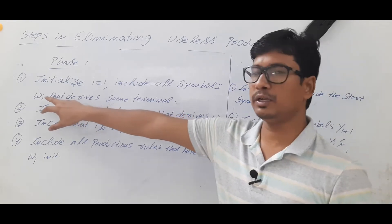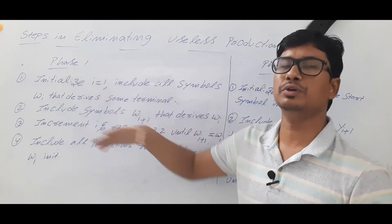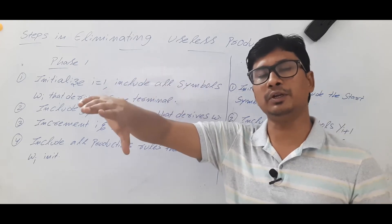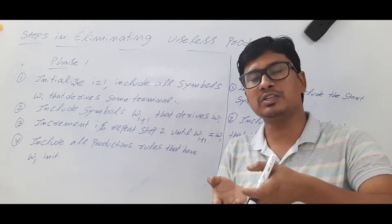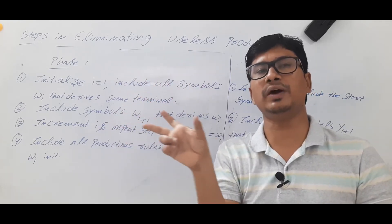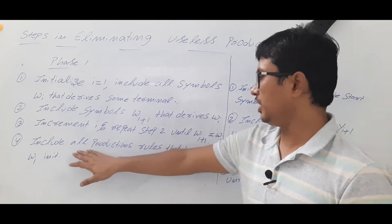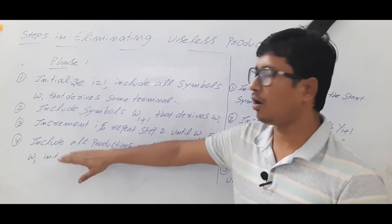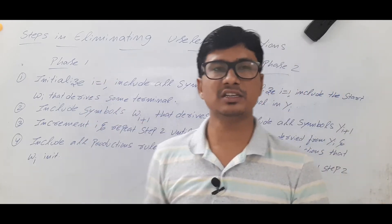You repeat this process until the elements in W_i equal the elements in W_{i+1}. Once W_i and W_{i+1} contain the same elements, you stop. Then include all production rules that have symbols in W_i, and keep all these productions in the given grammar. This completes phase 1.